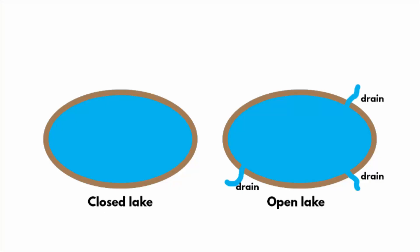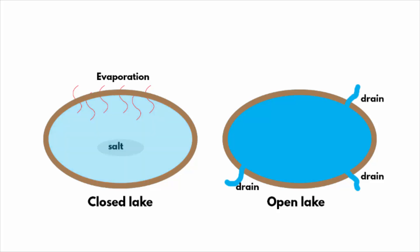All lakes are either open or closed. If water leaves a lake by a river or other outlet, it is said to be an open lake. All freshwater lakes are usually open lakes. If water disappears from a lake by evaporation, then that lake is said to be a closed lake. Closed lakes usually become saline or salty, because as the water evaporates, it leaves behind solid matter which is mostly salt.